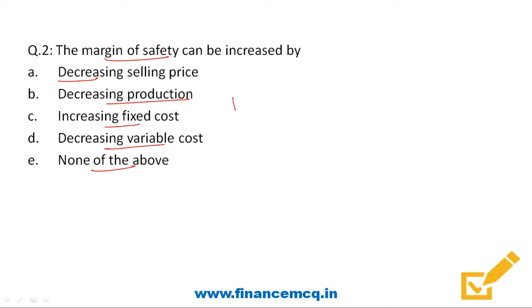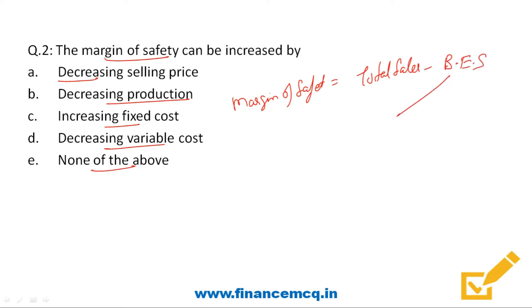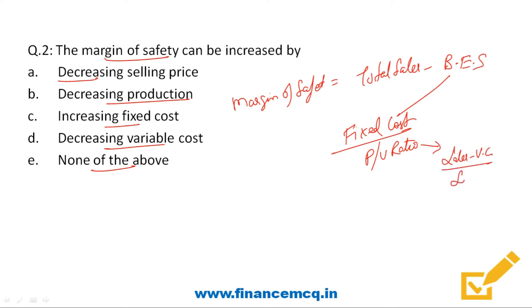First of all we should know the formula for calculating margin of safety. Margin of safety is the difference between total sales and breakeven sales. Breakeven sales is calculated as fixed cost upon profit volume ratio, and the formula for profit volume ratio is: sales minus variable cost, upon sales, into 100.